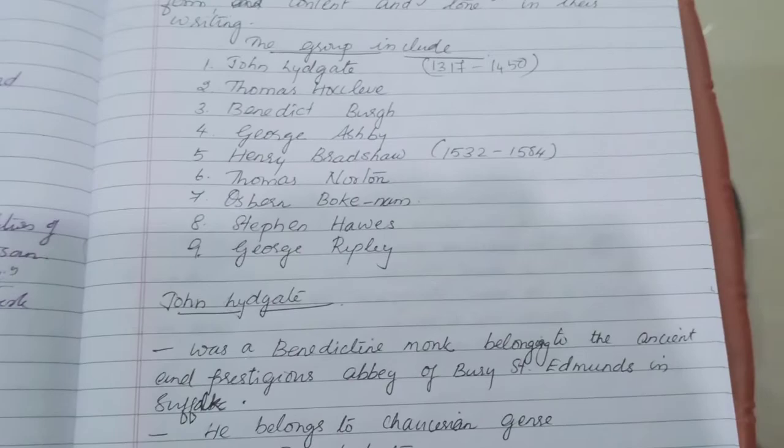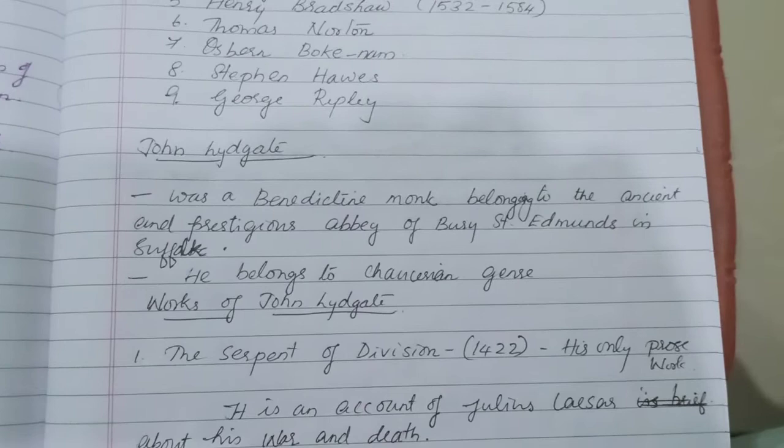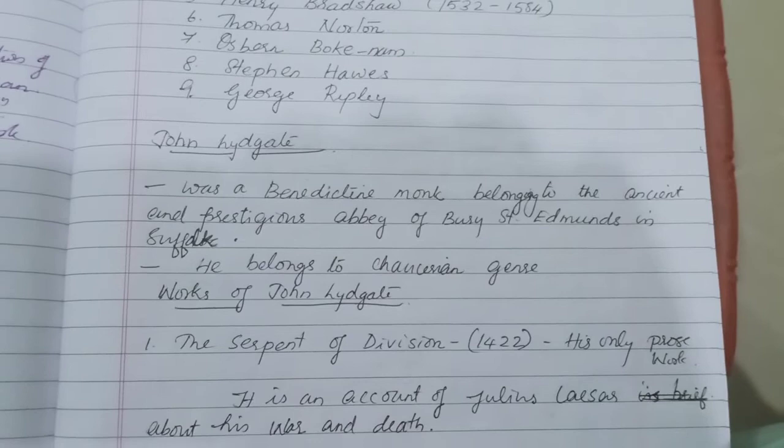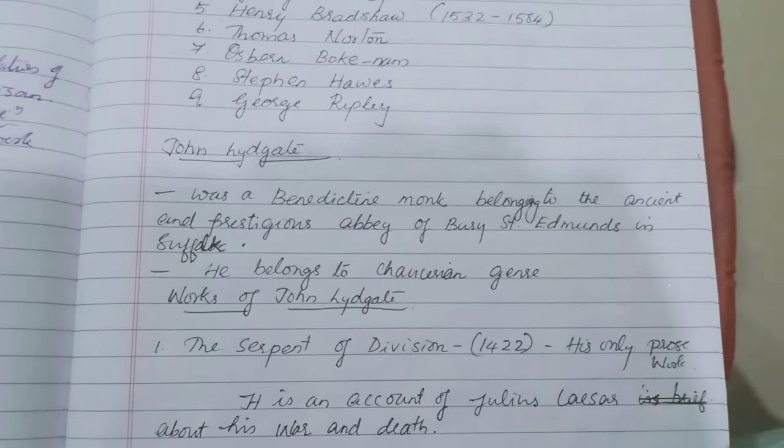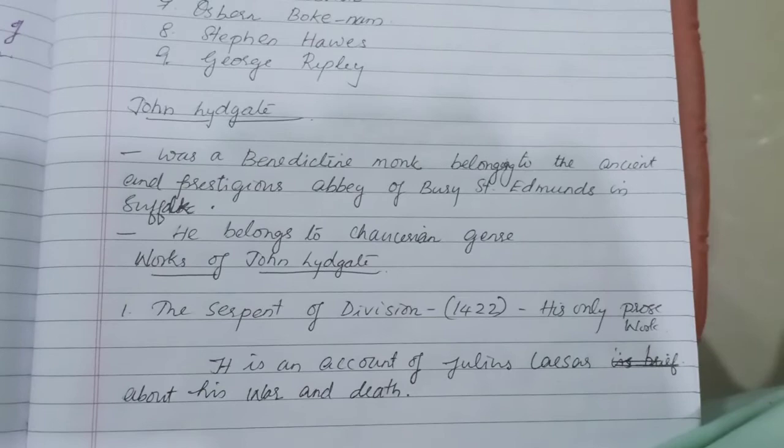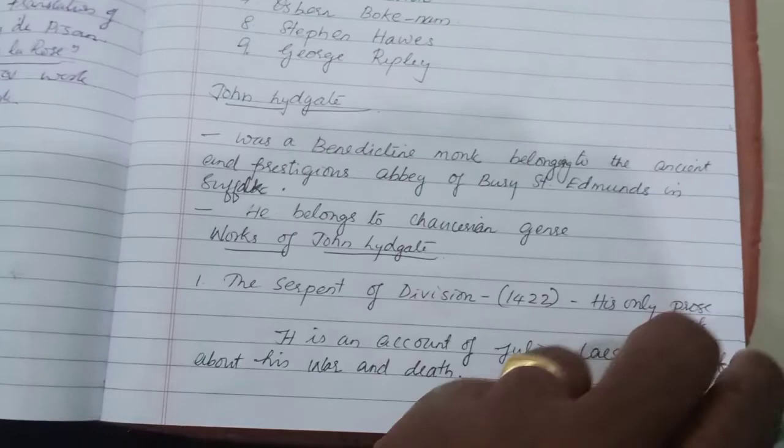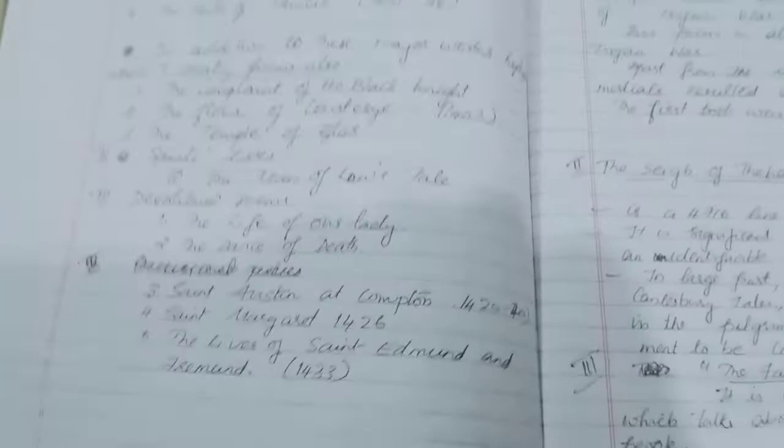The major works of John Lydgate — first I should talk about his only prose work, that is The Serpent of Division, which he completed in the year 1422. It is his only prose work and it is an account of Julius Caesar, about his war and death.